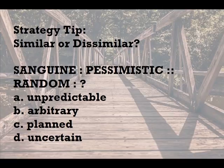Strategy tip: If you can't create an exact bridge between two unusual vocabulary words, consider whether the words are closer to being similar in meaning or dissimilar. For example: sanguine is to pessimistic as random is to — A) unpredictable, B) arbitrary, C) planned, D) uncertain. Just as sanguine, or hopeful, is the opposite of pessimistic, so random is the opposite of planned.